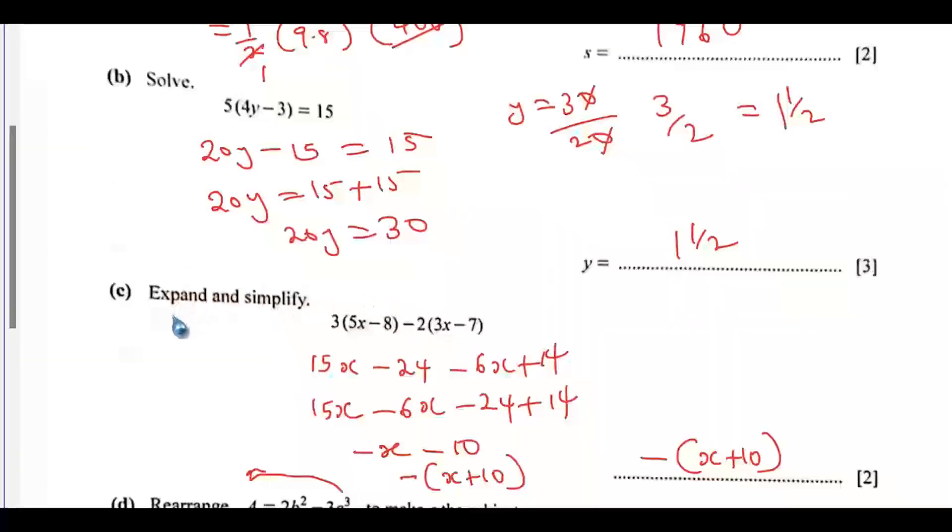Here, we are to expand and simplify this expression. This is correct but there is an error here. 15x minus 6x should give us 9x, but I wrote negative x here. I did 5x minus 6x. It was in the night.